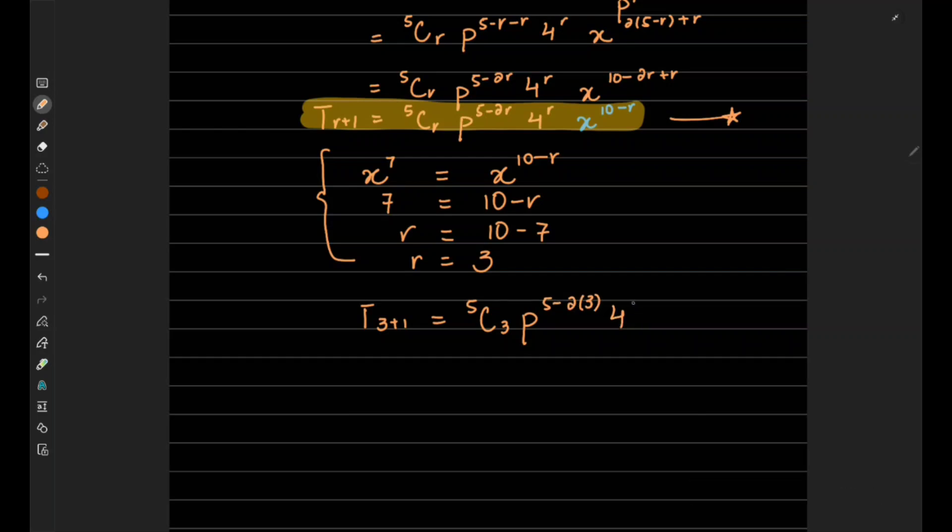And x^(10-3). So this will give you 5C3 is 10, p^(5-6), that means p^(-1).